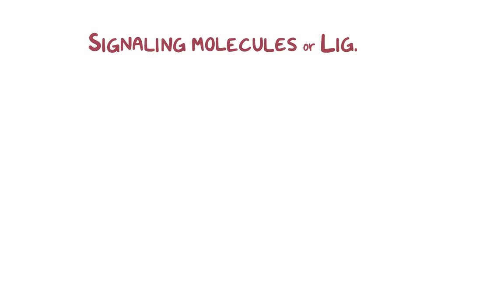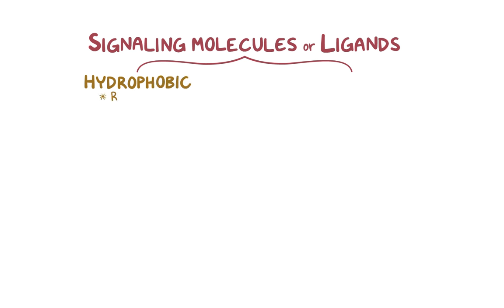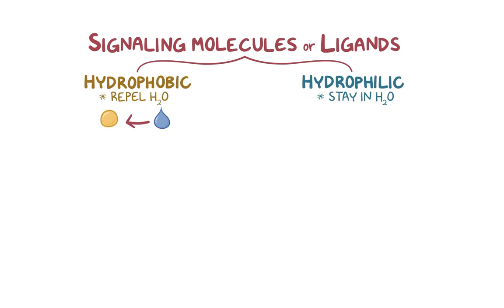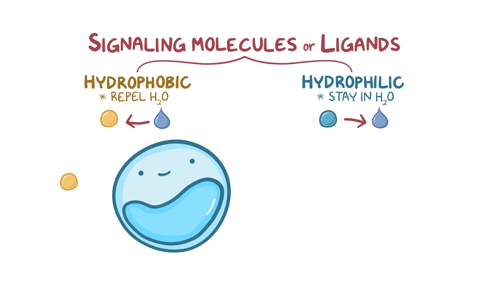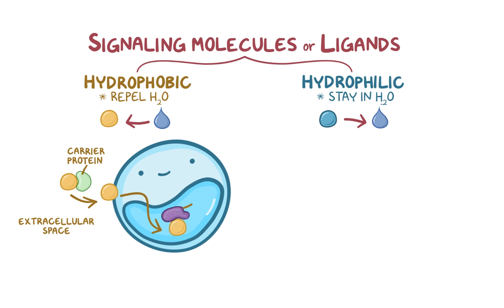Signaling molecules, or ligands, can be hydrophobic — meaning they tend to repel water — or hydrophilic, meaning they tend to stay in water. Hydrophobic signaling molecules can't freely float in the extracellular space, so they're brought into the target cells by carrier proteins. Hydrophobic molecules can then diffuse across the cell membrane and bind to receptor proteins inside the target cell, either in the cytoplasm or in the nucleus.